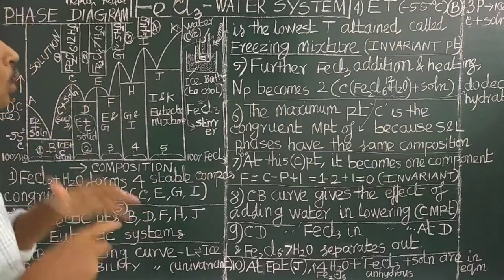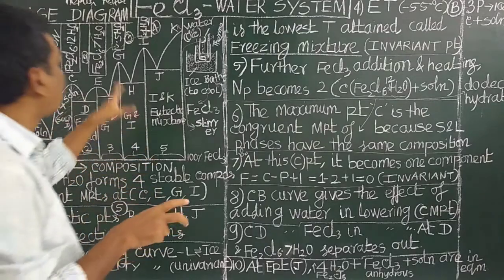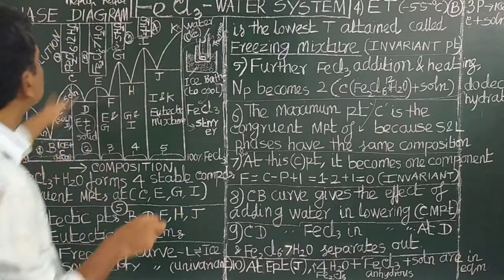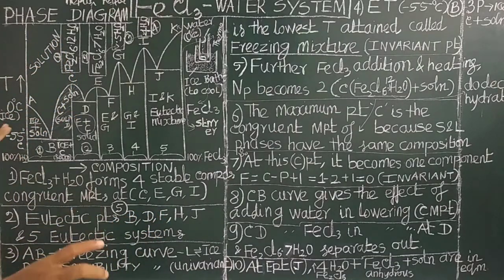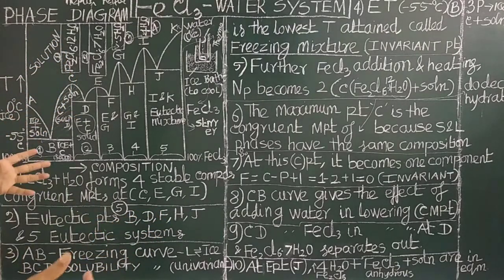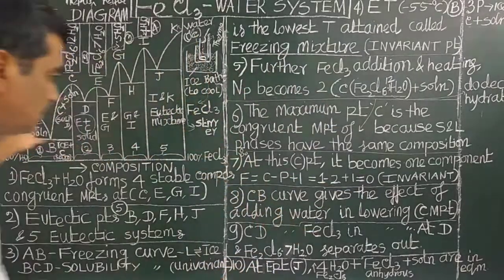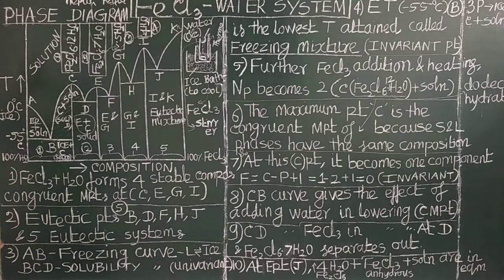Similar to two-component systems, the reduced phase rule is applied here. The reduced phase rule is used to describe the phase diagram. Once you draw the phase diagram, you can easily explain all these points. Let us now see the phase diagram and how it is obtained.